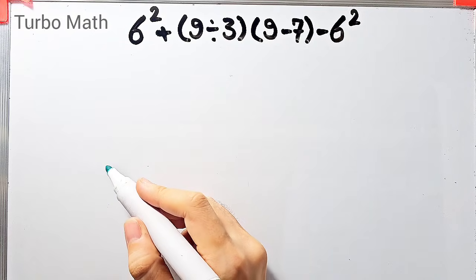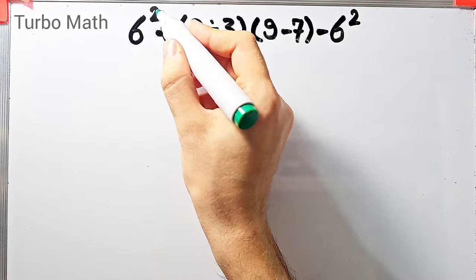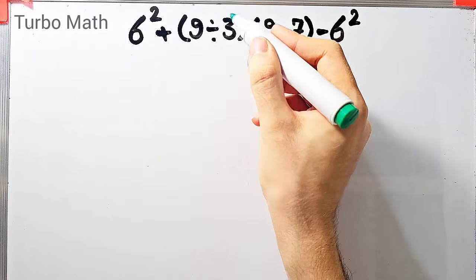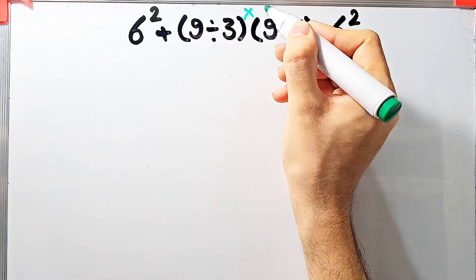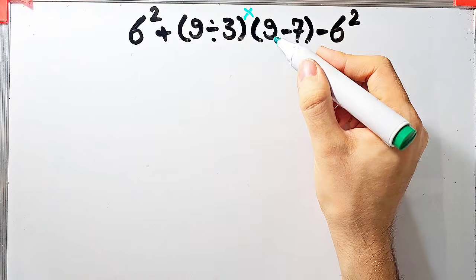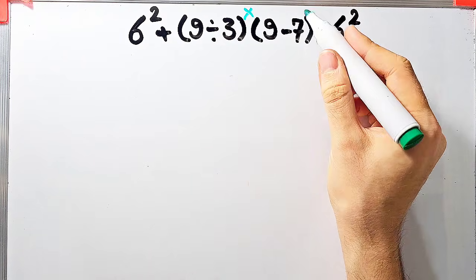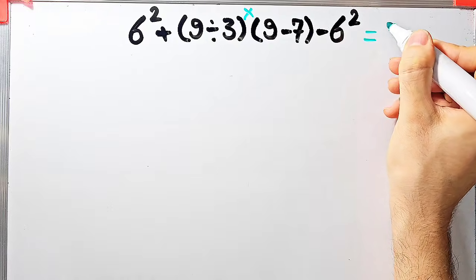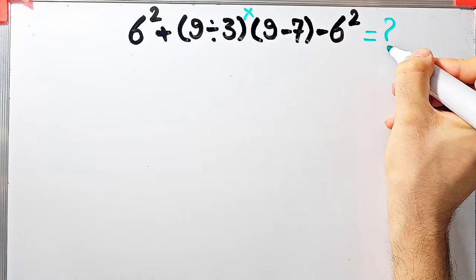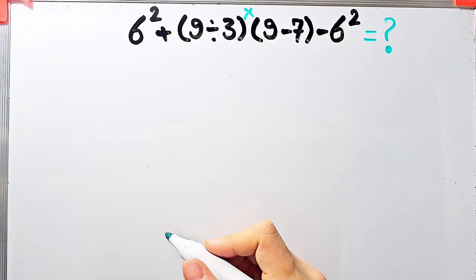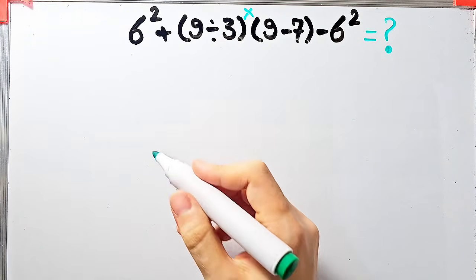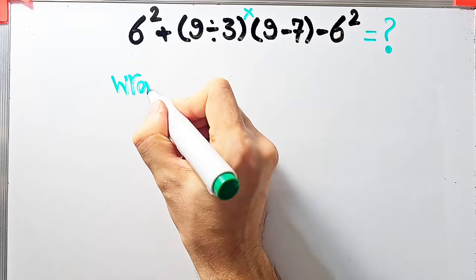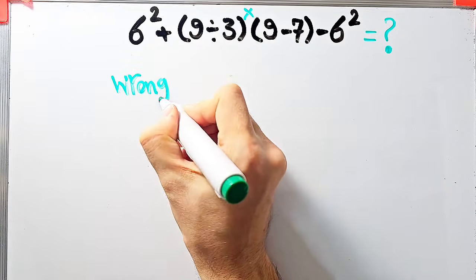In the first question we have 6 to the power of 2, plus open parenthesis 9 divided by 3 close parenthesis, then times open parenthesis 9 minus 7 close parenthesis, minus 6 to the power of 2. What is the answer? Some people solve this question by starting from the left without paying attention to the priority of mathematical operations.